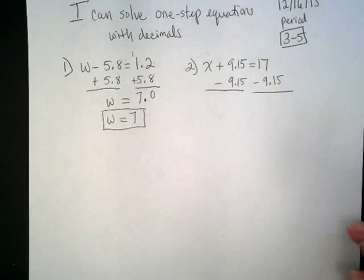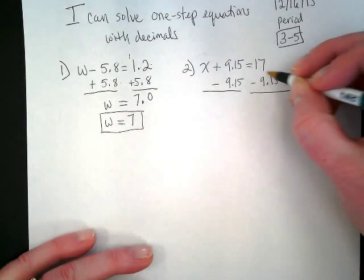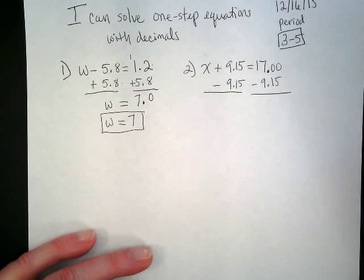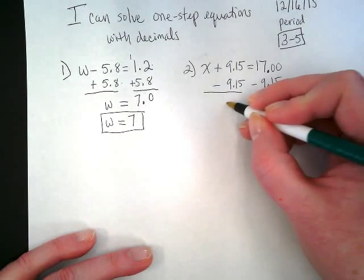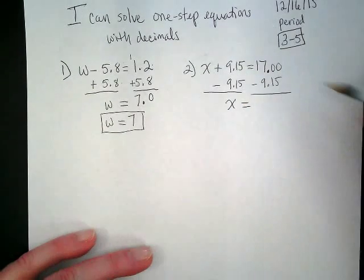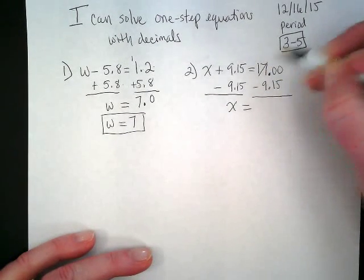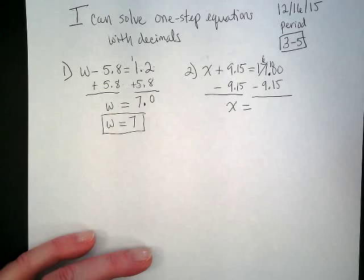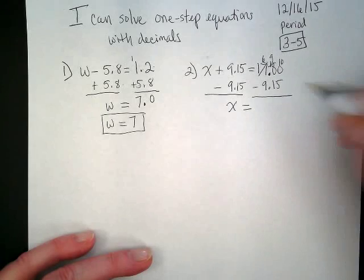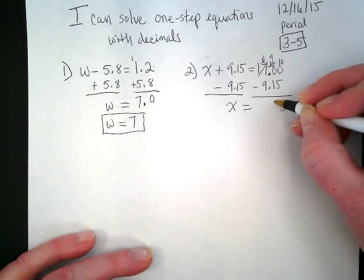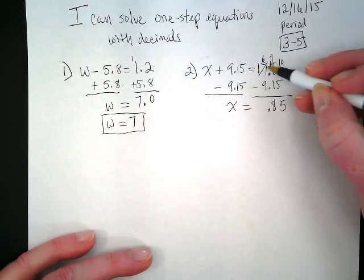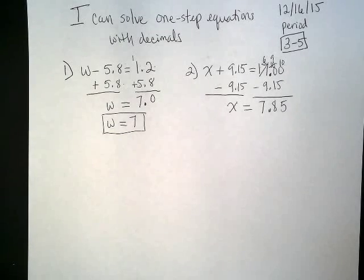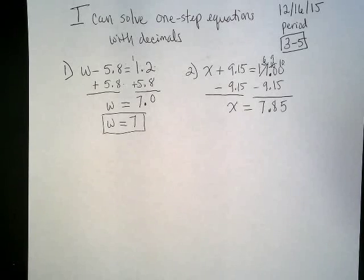Notice on the right side that 17 doesn't have a decimal. It's invisible right now, isn't it? So we're going to make it visible. We're going to put it here and we need to put a couple of zeros as placeholders. On the left side of the equation everything goes away except for the X. And on the right side we need to subtract 9.15 from 17. So we're going to borrow from the 7 and make this 6, and this becomes 10. We have to borrow from the 9, so this is now the 10. 10 minus 5 is 5. 9 minus 1 is 8. Bring down our decimal, and 16 minus 9 is 7.